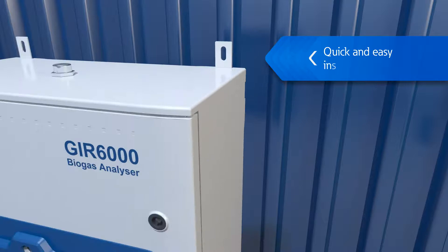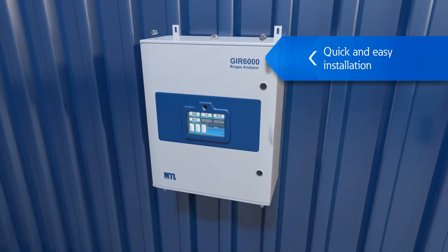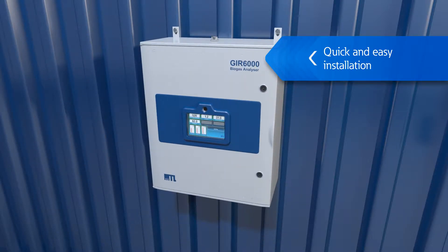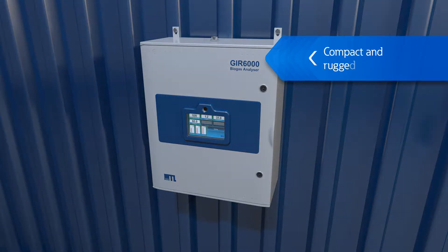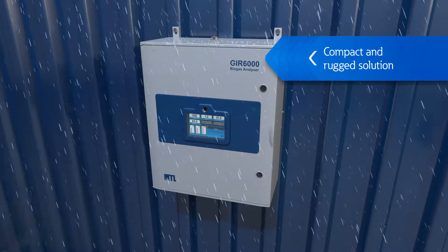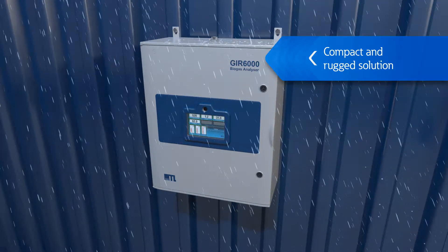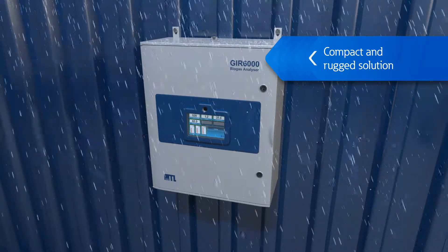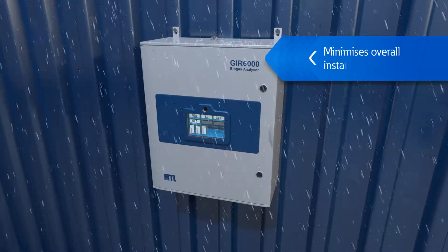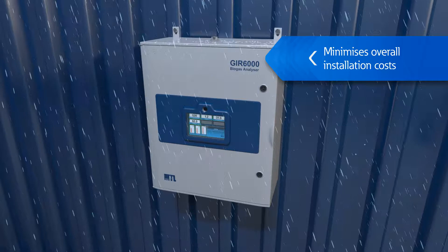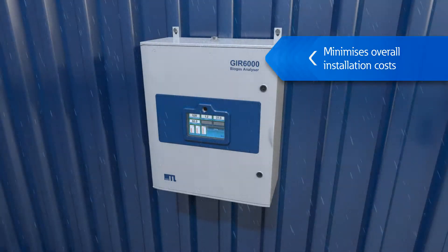Installation is quick and easy, using straightforward and secure connections to electrical and gas supplies. The MTL GIR 6000 is a compact IP65 weatherproof single box system. This lightweight yet rugged solution offers mounting flexibility, which minimizes installation costs.